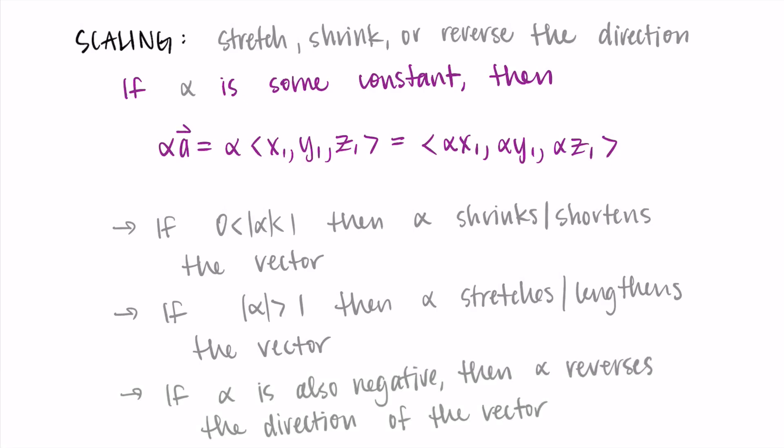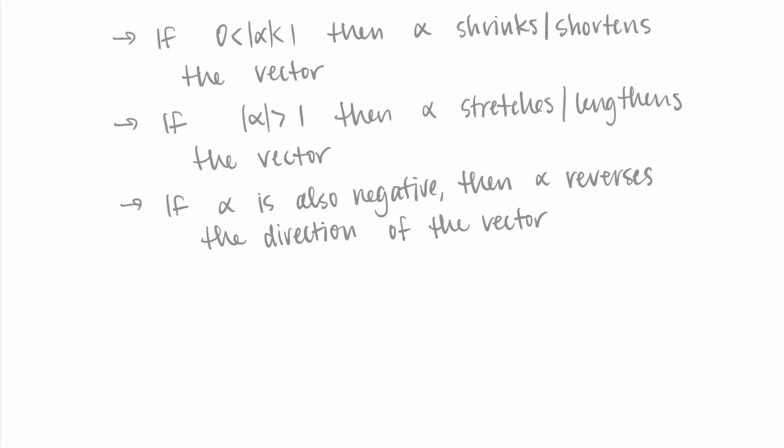Lastly, if we have alpha that is also a negative value, so if it's a negative, then alpha is going to reverse the direction of the vector. This is because we're taking that negative value and multiplying it by each of the components. So now the direction on the x, y, and z is changing.